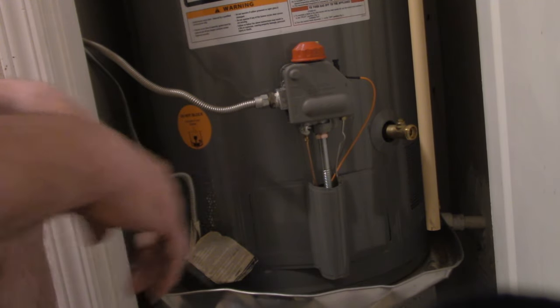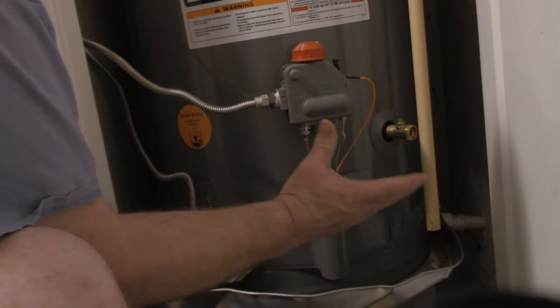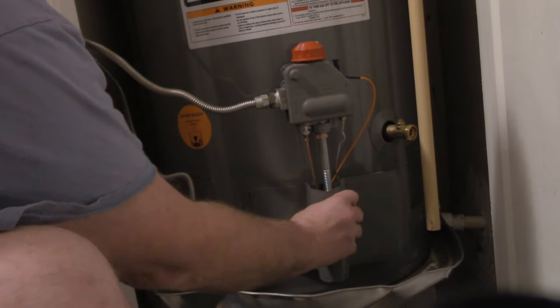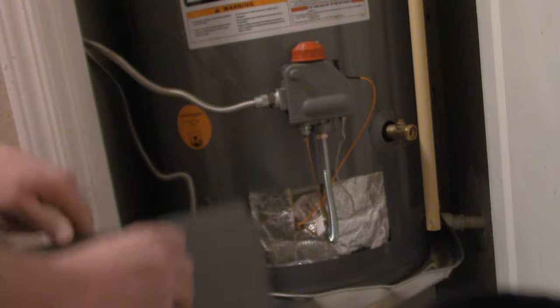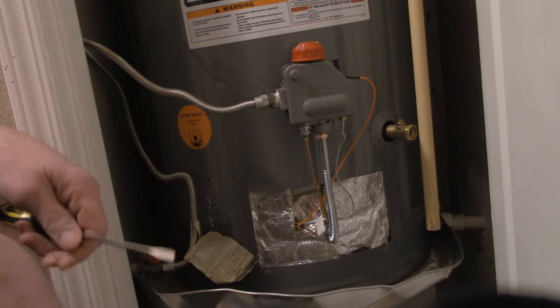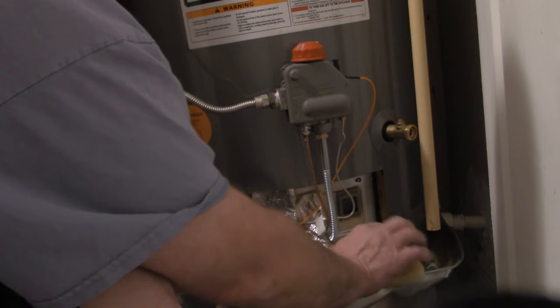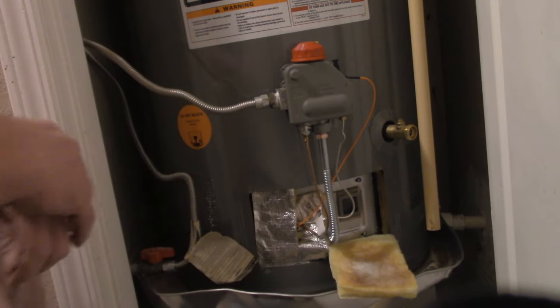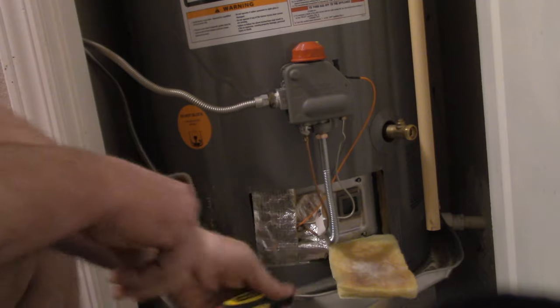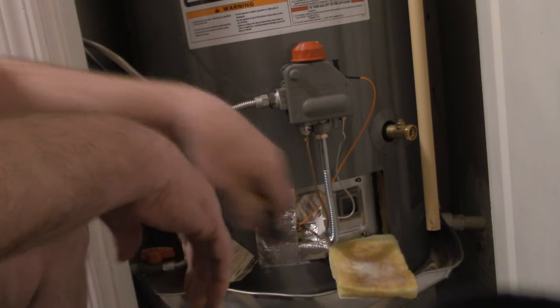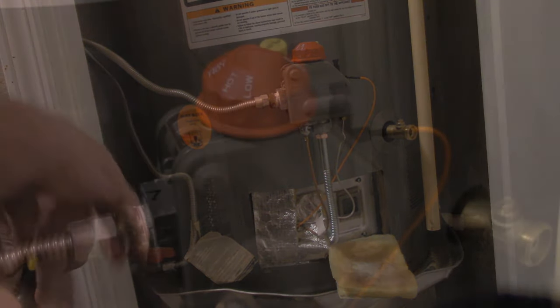So to check your pilot light on this particular model, you grab a hold of this cover, squeeze it, and it'll slide on out, set that out of the way. And then you're going to peel back this insulation right here. And in that window there, you can see that there is no pilot light. So let's see how to fix that.